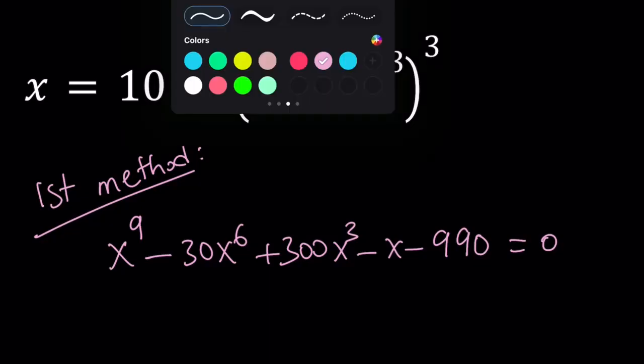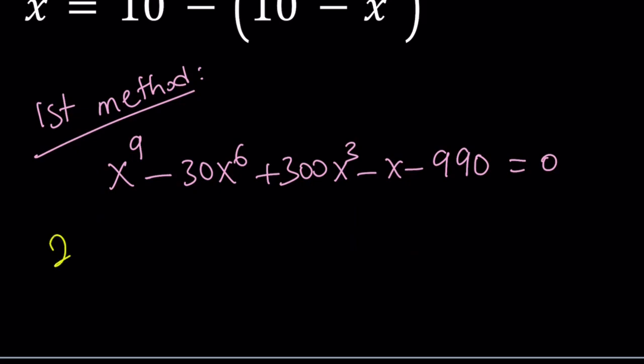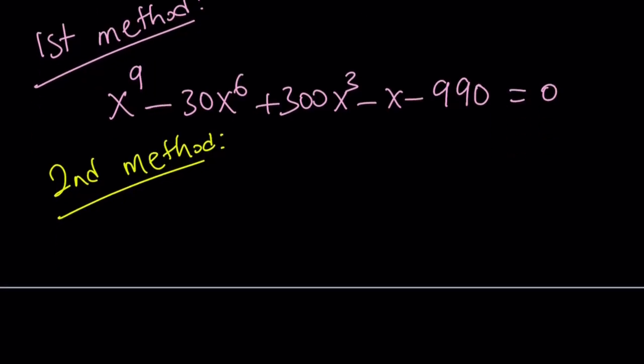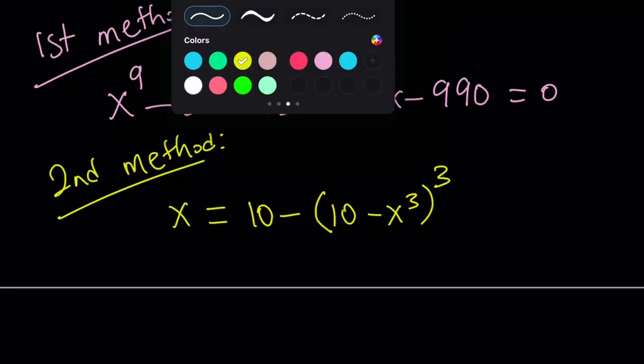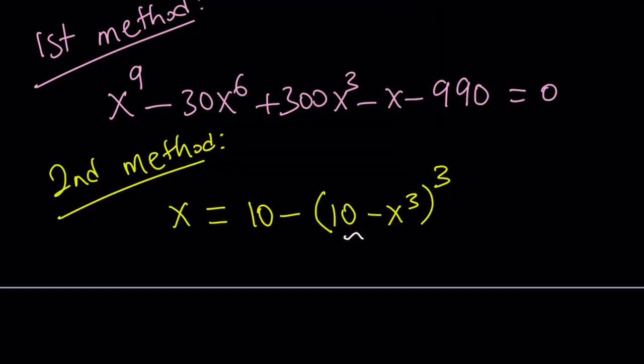Let's go ahead and talk about the second method. The name of the second method is substitution to the rescue. So let's rewrite the original problem. Now we're going to go ahead and replace 10 minus x cubed with something. How about y?